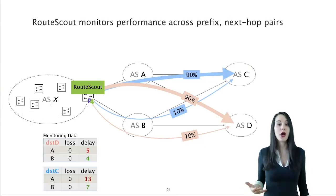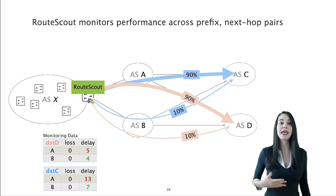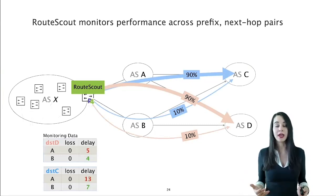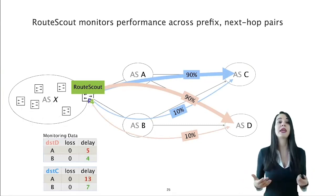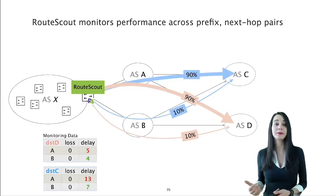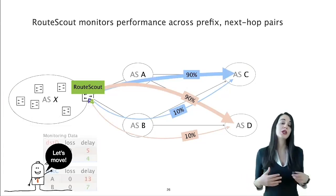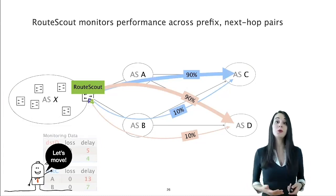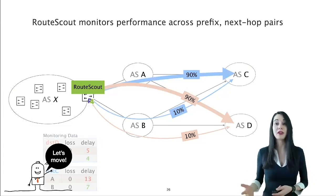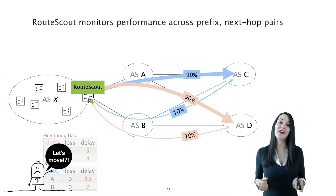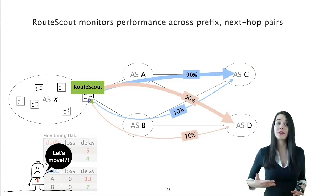Next, RouteScout monitors loss and delay across destination next-hop pairs and finds that while loss is low in all pairs, the paths via ASB have significantly lower delay. So, a naive approach would be to immediately move all traffic via ASB. RouteScout does not do that, of course. Observe that such a move would easily congest some link in the new path or cause oscillation or it might not even align with the operator's goals.